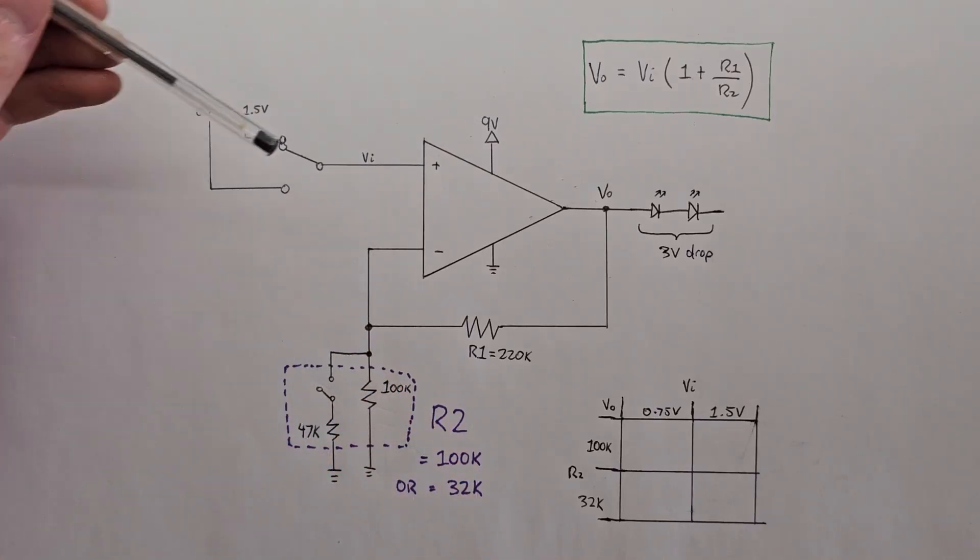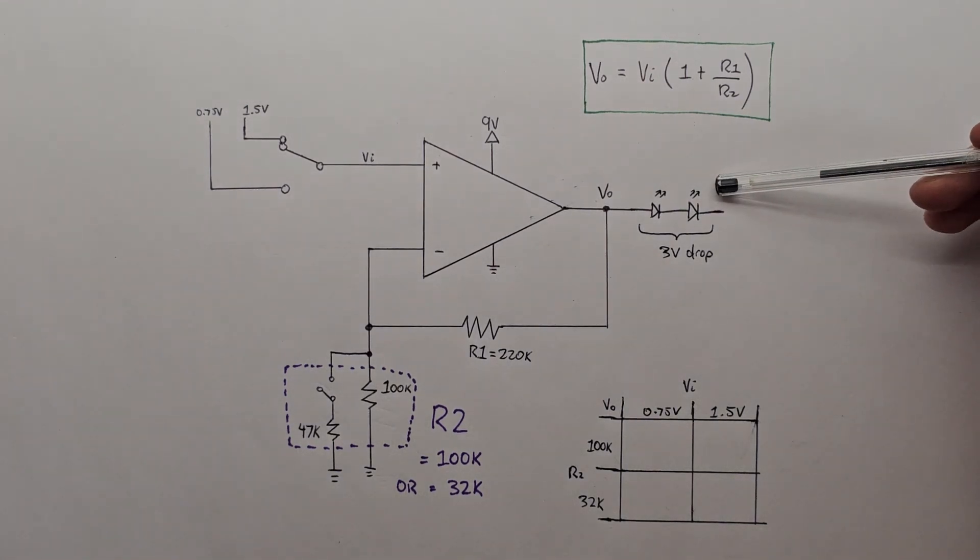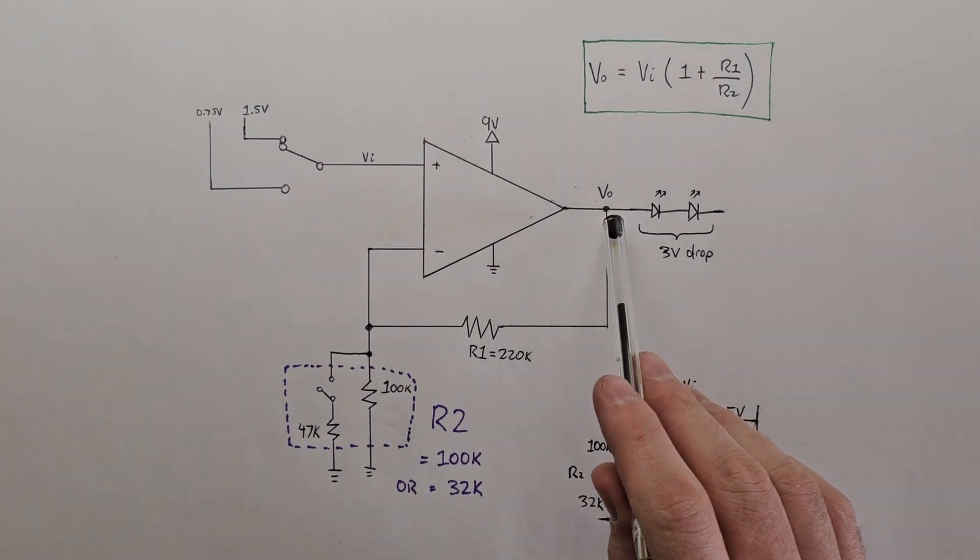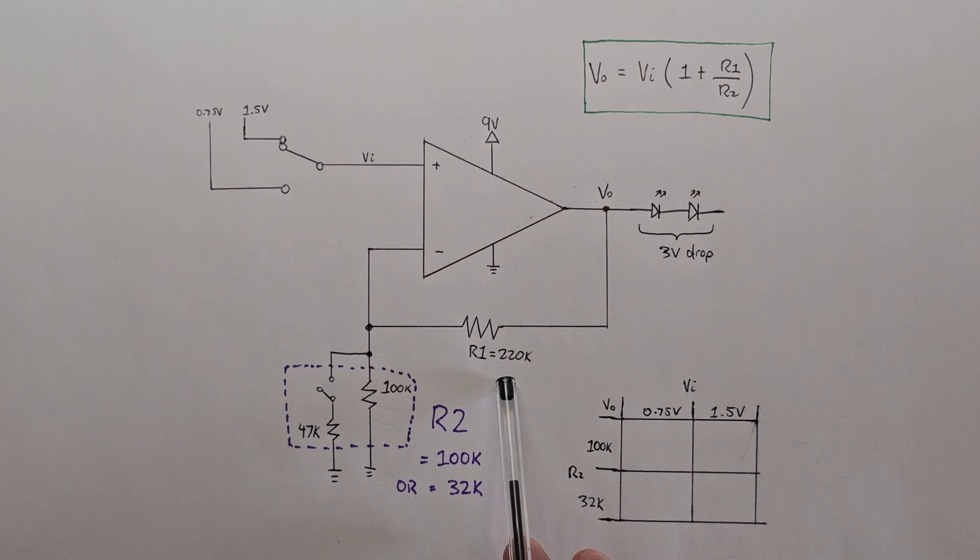On the setup we have a switch that lets us change the input voltage between 1.5 volts from one battery or halved, so the voltage on the input is either 1.5 or 0.75. On the output we have two LEDs in series which need at least 3 volts to turn on, and we have a feedback resistor from the output back to the negative input. This has 220k.